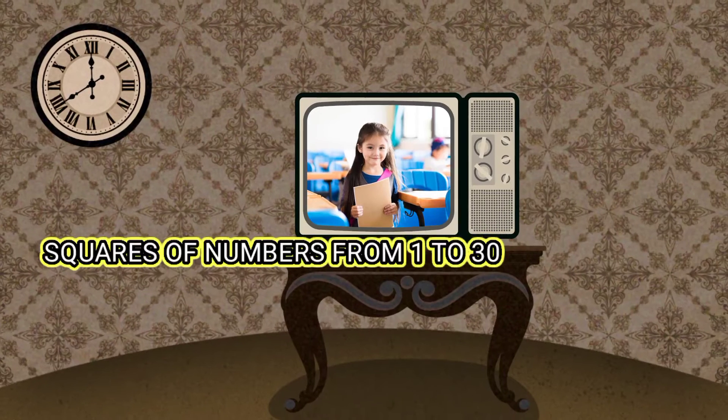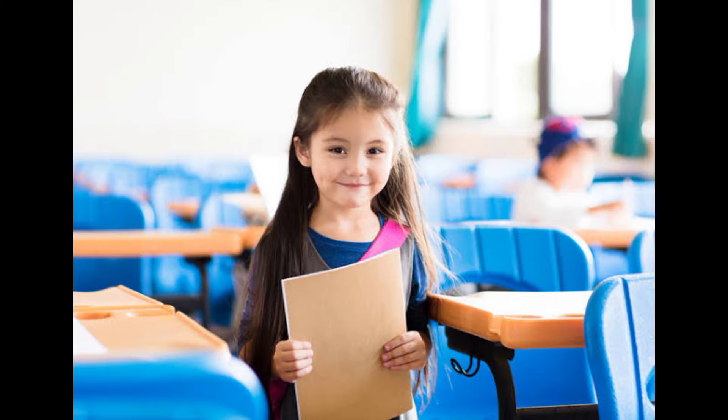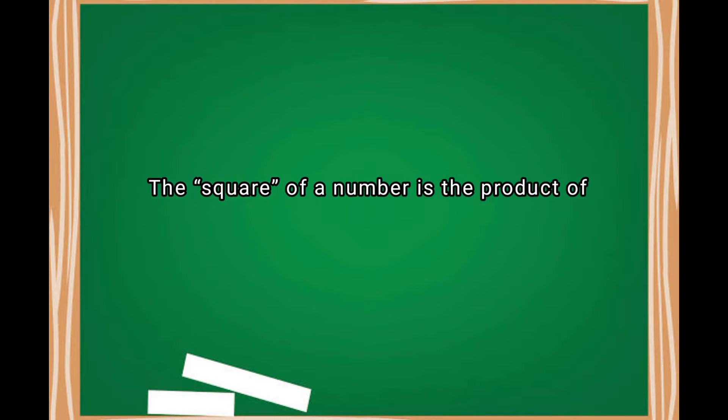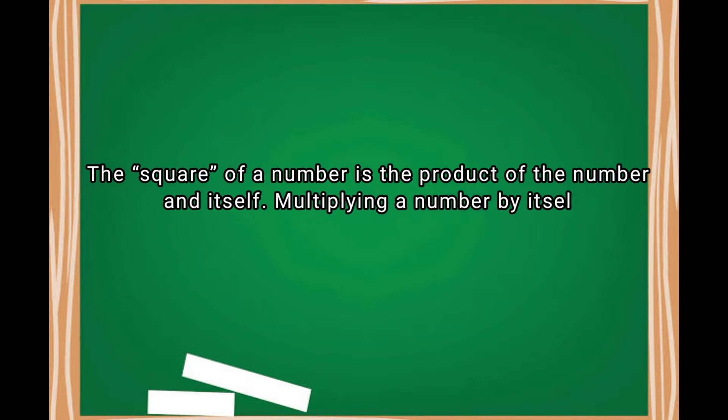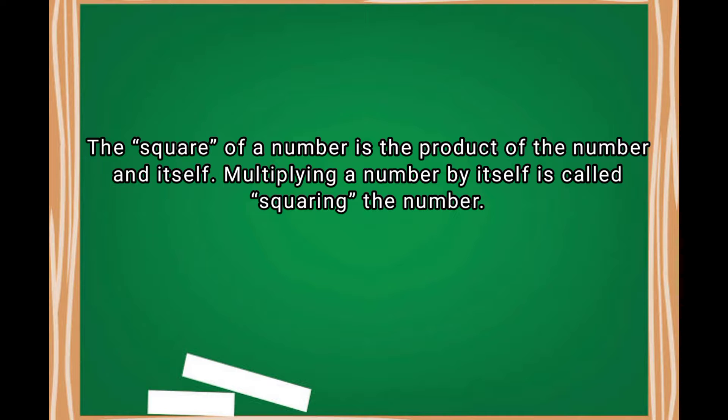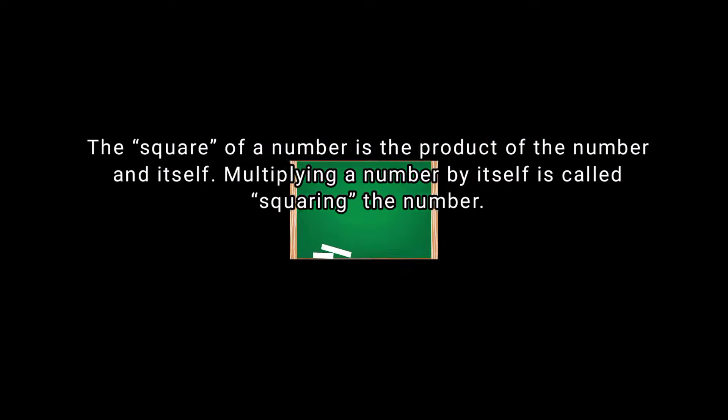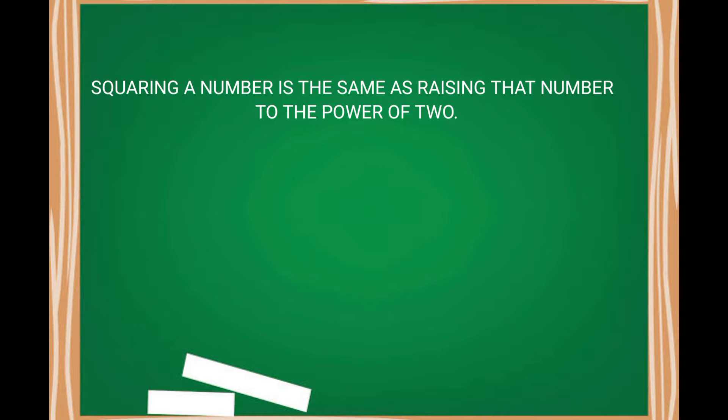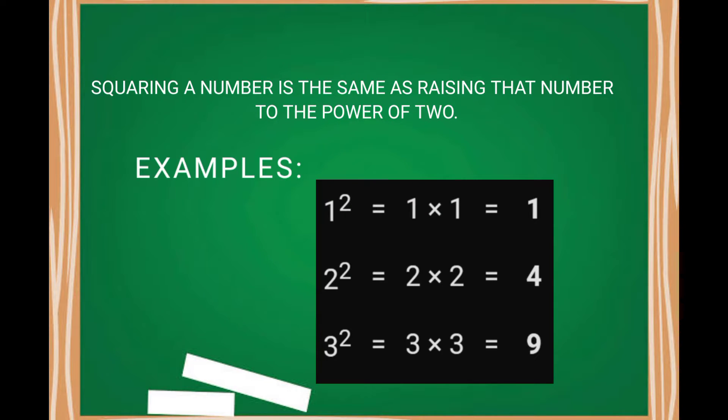Before learning the square numbers, first understand what is actually the square of a number. The square of a number is the product of the number and itself. That is, multiplying a number by itself is called squaring the number. Squaring a number is the same as raising that number to the power of 2.